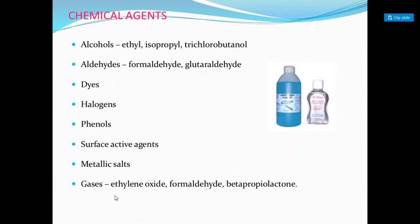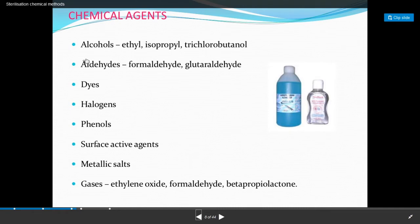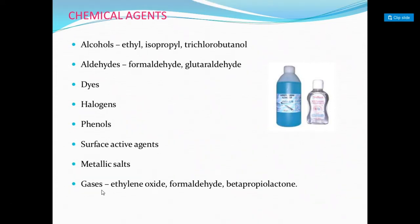Today we are going to study chemical methods of sterilization. These include different types of chemicals used for sterilization purposes: alcohols (ethyl alcohol, isopropyl alcohol, trichlorobutanol), aldehydes (formaldehyde and glutaraldehyde), dyes, halogens, phenols, surface active agents, metallic salts, and gaseous sterilizing agents — which include ethylene oxide, formaldehyde, and beta-propiolactone.